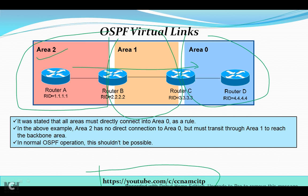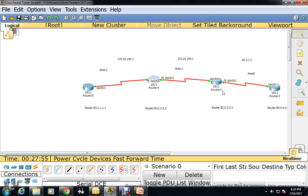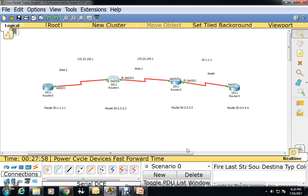Area 0 is the backbone. In normal OSPF operation, this scenario shouldn't work properly. This router can get some updates from Router D, but Router A getting updates from Router D is not possible. I will show you — I have created an example here with 4 routers in the same configuration. This is Area 2 on this side, Area 1 on this side, and Area 0 here. I have used networks 10.1.1 and 172.22.144.1, and I have already configured OSPF.